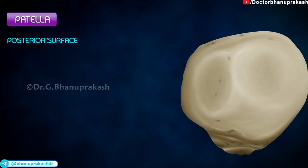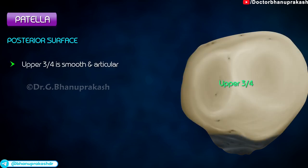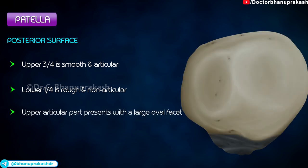Posterior surface. The upper three-fourths is smooth and articular, whereas the lower one-fourth is rough and non-articular. The upper articular part presents with a large oval facet.